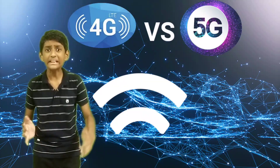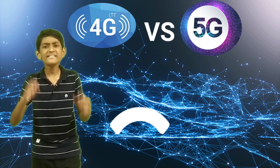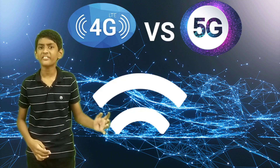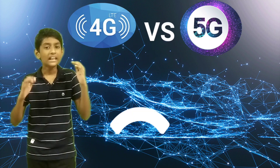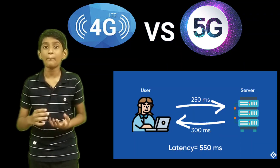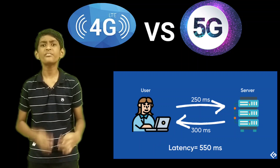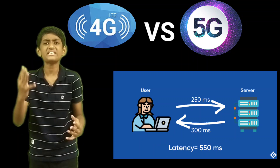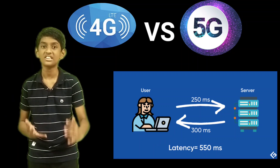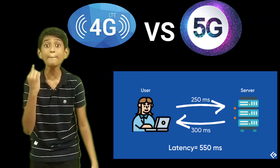The biggest difference between 4G and 5G is latency. For people who are not familiar with latency, latency is the delay between the command given and received. For example, 4G's latency is 60 to 100 milliseconds, whereas 5G's latency is just 1 millisecond.